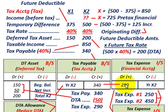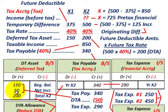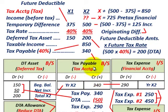So you debit tax expense for $290,000. The debit amount of $50,000 for the DTA balances with the credit of $340,000 for tax payable.